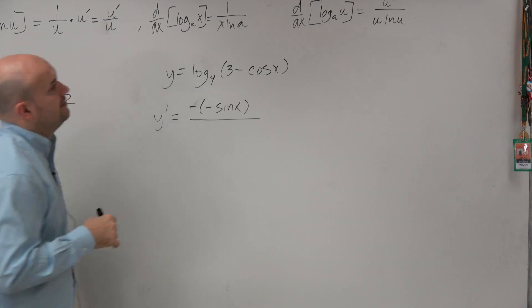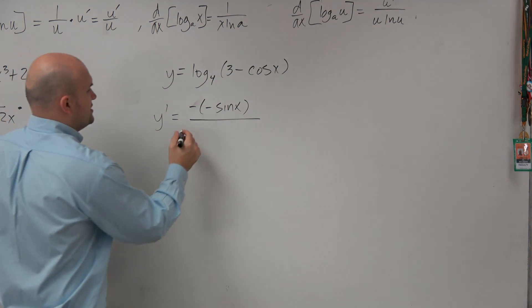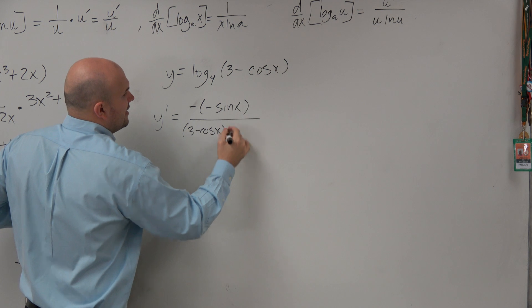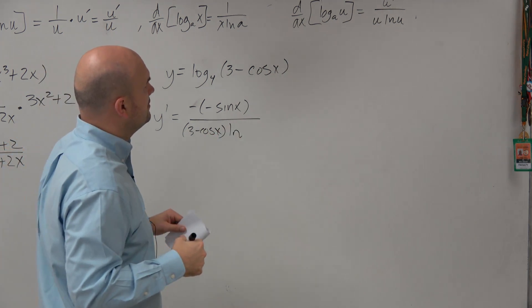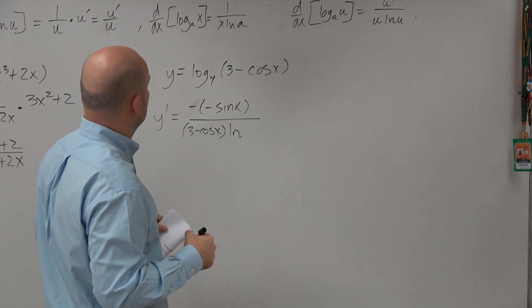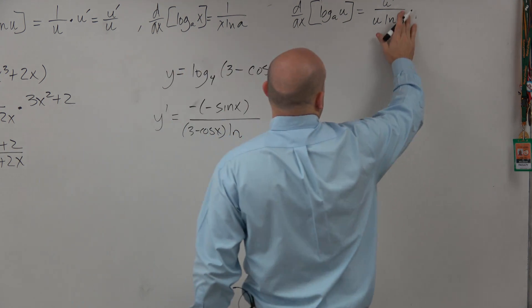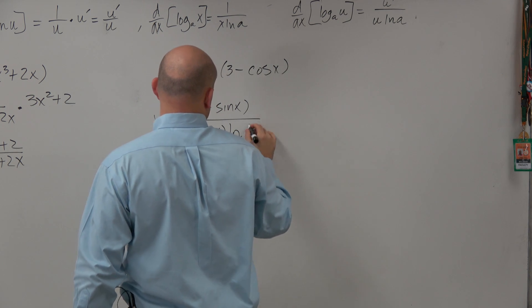All over, now we're taking our u, which is 3 minus cosine of x, times the ln of... I wrote that... ln of a... sorry about that, ln of 4.